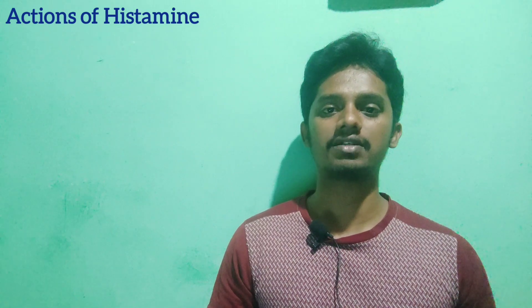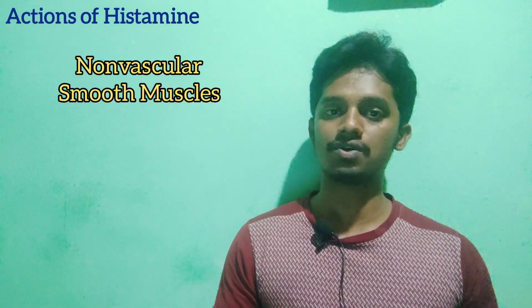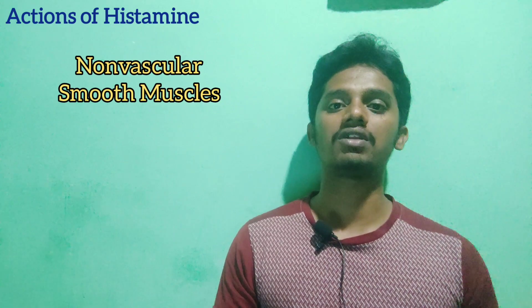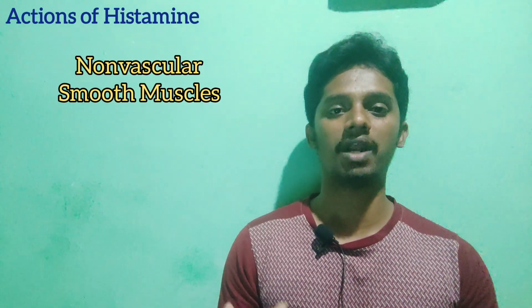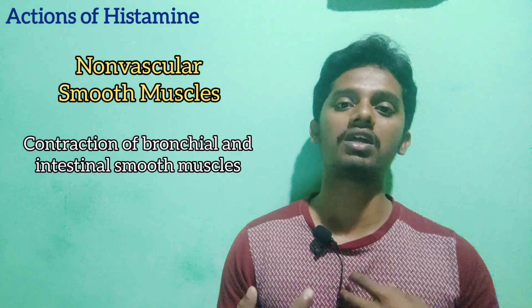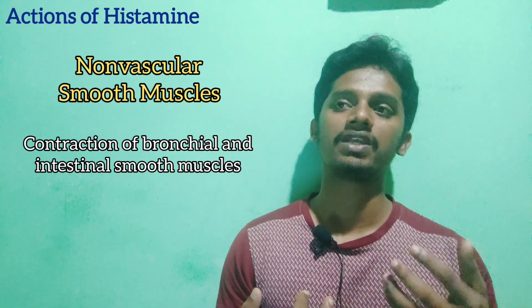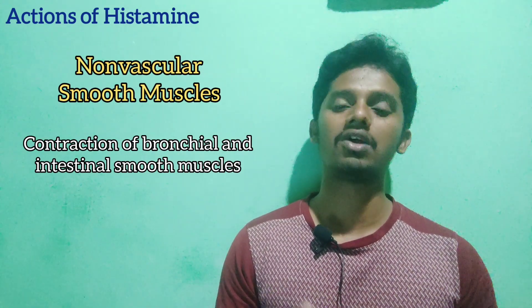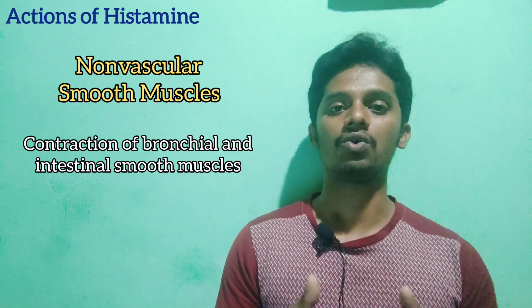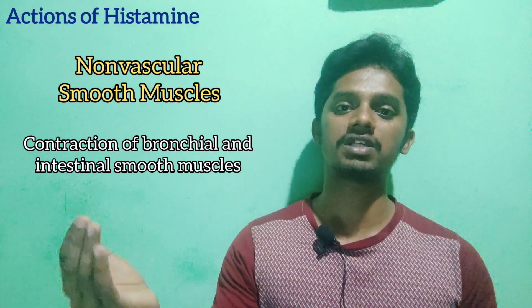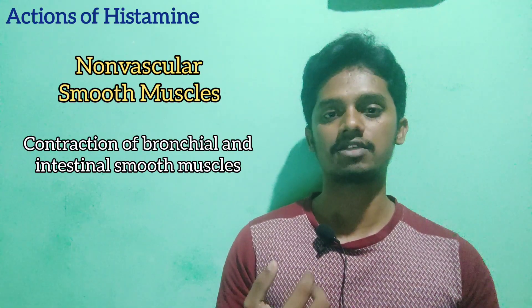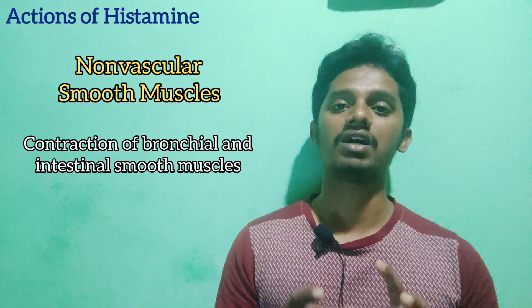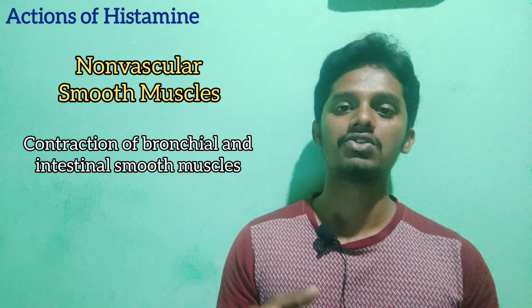Next, histamine actions on smooth muscles. Blood vessels are vascular smooth muscles. The second category is non-vascular smooth muscles. Examples of vascular smooth muscles are blood vessels; examples of non-vascular smooth muscles are bronchial muscles and intestinal smooth muscles.